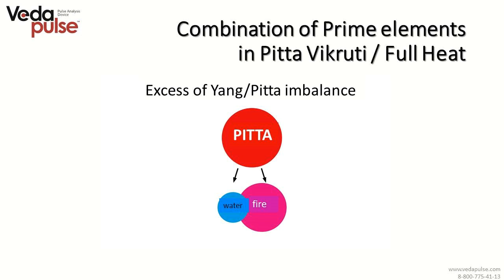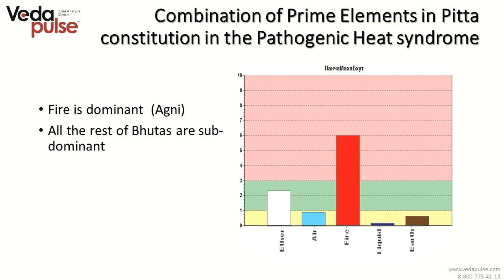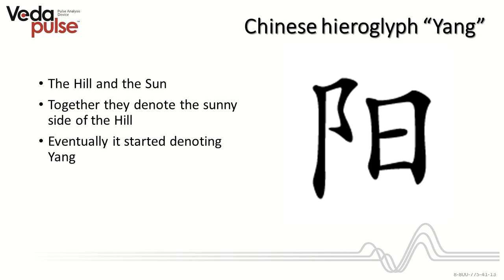According to Panchamahabhuta theory, Pitta dosha is presented as fire dissolved in water. We may see this as the acidic environment of secretion enzymes, where fire is a dominating element. The Panchamahabhuta tab allows to carry out a deep expert analysis. The position of each element shows predisposition to certain states of the body. Here, fire is dominant and all other bhuta are subdominant.